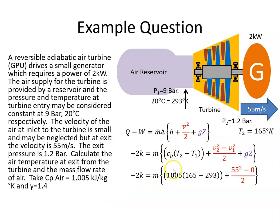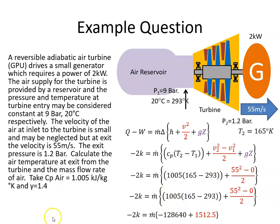So I'm going to plug the values in. So 1005 times 165 minus 293 is minus 128640. And 55 squared minus zero, and then divide back by 2 is 1512.5. So when I add those together, I get minus 127127. So the m then is just 2000 divided by 127127.